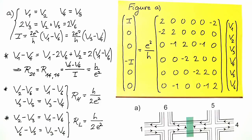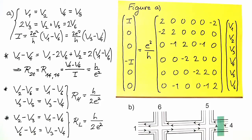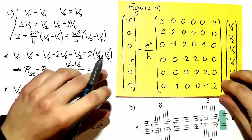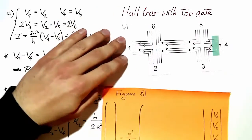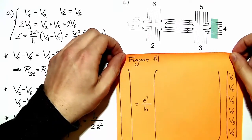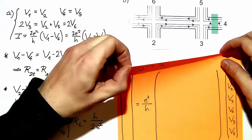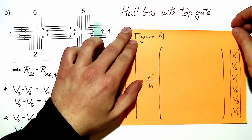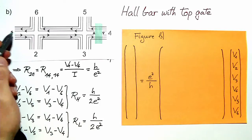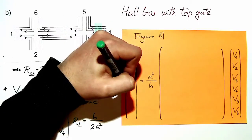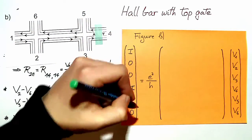Before commenting on the results, let's solve the case where the gate is not in the middle but at contact 4. Again, we write down the transmission matrix. As before, current is injected into contact 1 and leaves contact 4, with no current in the other contacts, and again we count the modes.